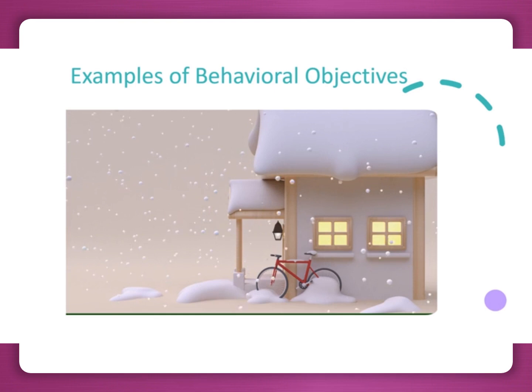General: The learner will be able to properly examine a stool specimen for the presence of ova and parasites. Specific: The learner will be able to take stool specimens infected with one of ten possible ova and parasites and correctly identify them. Even more specific: The student will be able to take stool specimens infected with one of ten possible parasites, process it according to standard procedures, and identify under a microscope examples of ova and of parasites. Parasites must be identified by scientific name.